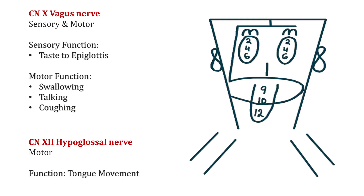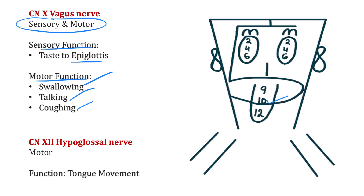Cranial nerve 10, the vagus nerve, is a mixed type cranial nerve — both sensory and motor. Its sensory function gives the sense of taste to the epiglottis, not the tongue. Motor functions include swallowing, talking, and coughing.